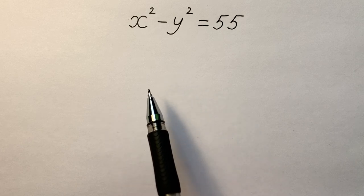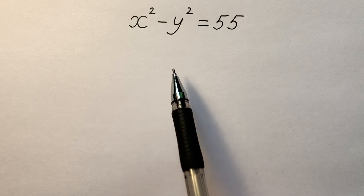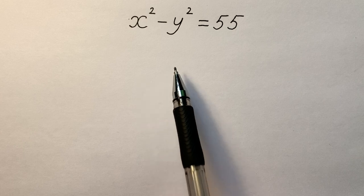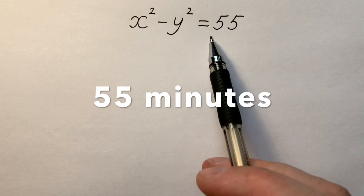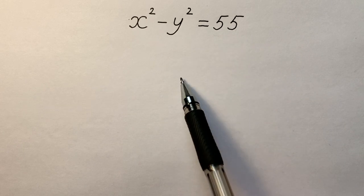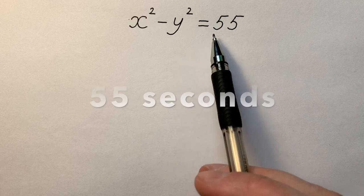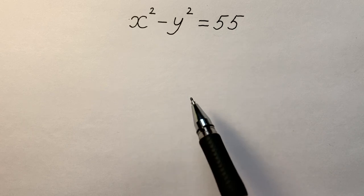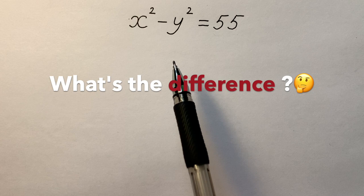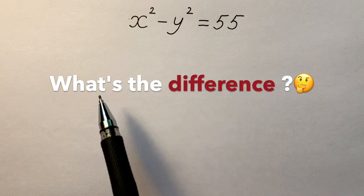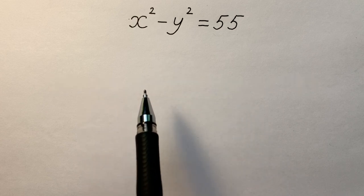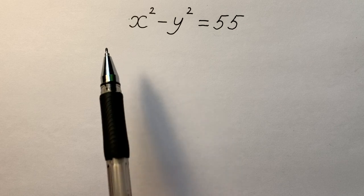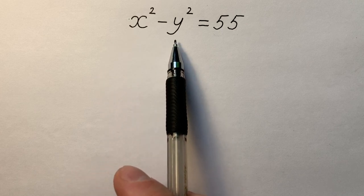Some teachers joke that there are only two types of students solving this equation. The first type spends 55 minutes to solve it, while the second type spends only 55 seconds to do it. What's the difference between these two types? I'll tell you about it a little bit later, but at first let's write a difference of squares on the left side.